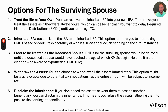Option five: you could disclaim the inheritance, refusing the assets and allowing them to pass to the contingent beneficiary. This could be a unique estate planning strategy for a surviving spouse with a high net worth who could be subject to estate taxes — especially relevant since estate tax exemptions are scheduled to be cut roughly in half at the end of next year. IRAs are very complicated vehicles, and they become even more complicated once the owner passes away. If you have questions or want to talk through strategies to minimize taxes, reach out to schedule a complimentary introductory call with our team at Allison Wealth Management.